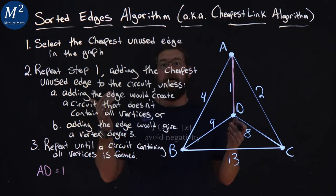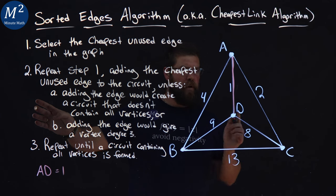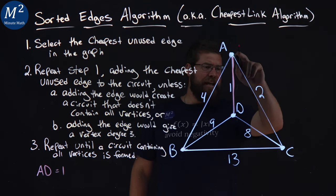Now, repeat step one, adding the cheapest unused edge that we haven't had here, unless one of these two follows. Well, the cheapest unused edge here, I would say, is AC.